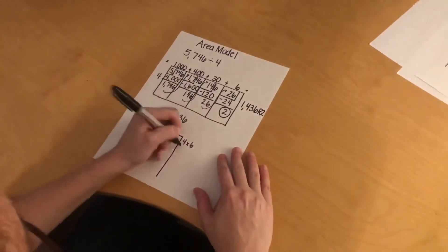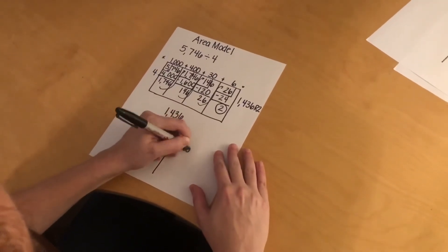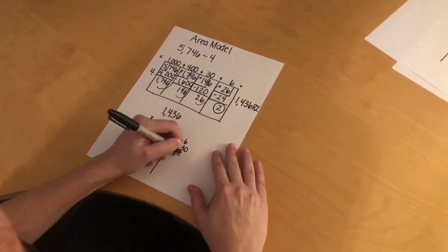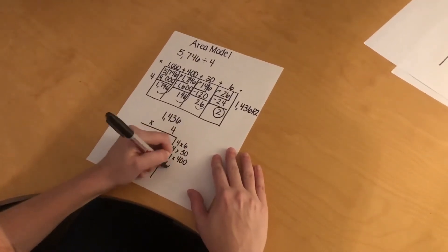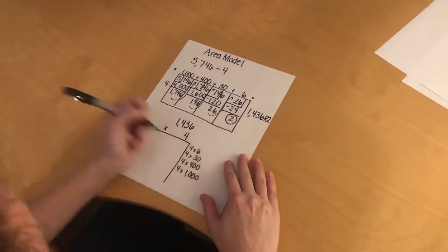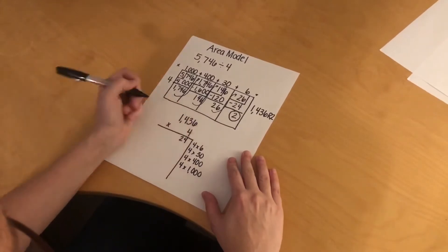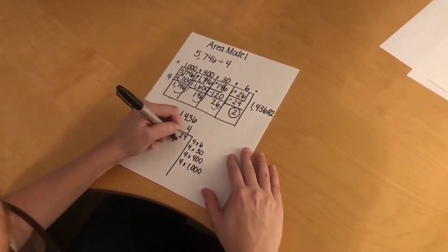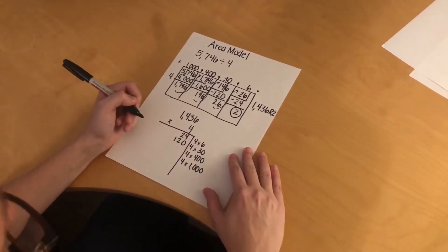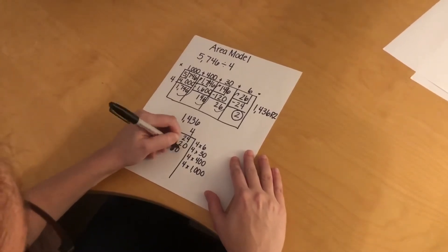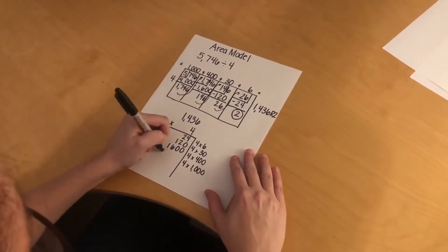I have 4 times 6, 4 times 30, 4 times 400, and 4 times 1,000. 4 times 6 is 24, 4 times 30 is 120, 4 times 400 is 1,600, and 4 times 1,000 is 4,000.